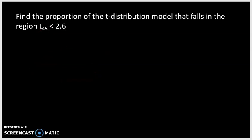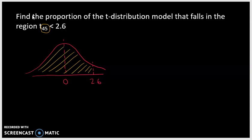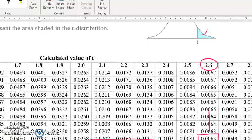The second problem is related. It just says: what proportion of the t-distribution model falls in the region where t with 45 degrees of freedom is less than 2.6? Again, I'm going to graph this. Here's our t-distribution model — 0 is the mean, 2.6 is somewhere greater than 0, and the region we're looking for is everything less than 2.6. Going to the t-table, 45 degrees of freedom, 2.6 — we just found that gives us 0.0063.